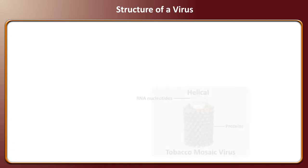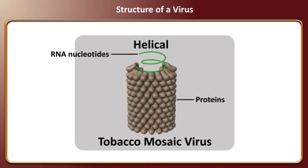The helical virus structure has a capsid with a central cavity or hollow tube that is made by proteins arranged in a helical fashion, with a nucleic acid in the middle.